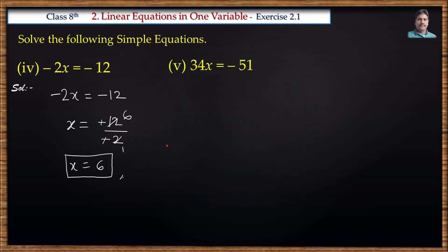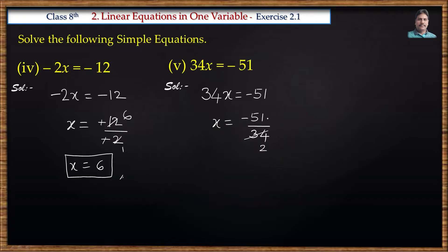Next problem: 34x is equal to minus 51. We need x value. 34 is multiplying, so we divide the right side. Minus 51 by 34: we cancel using the 17 table. 17 twos are 34, 17 threes are 51, so x is equal to minus 3 by 2.